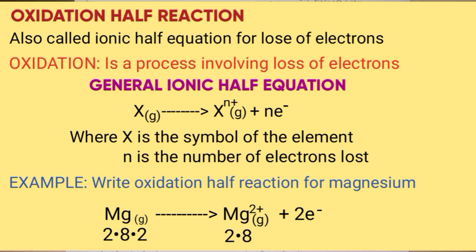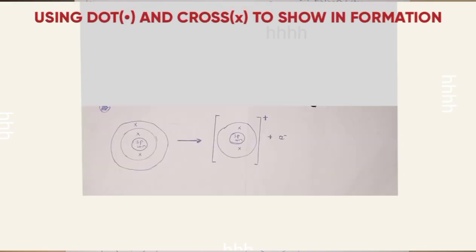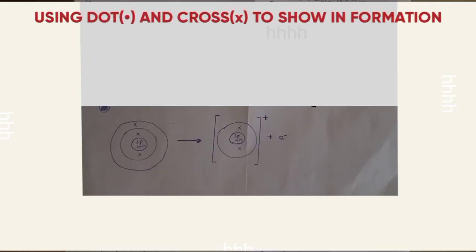Lastly, we will look at how to use the dot and cross to show ion formation. The diagram below shows lithium atom, which is 2.1. Then we have the lithium ion here, which is 2. It has a charge of plus, and the one electron lost here.